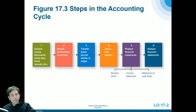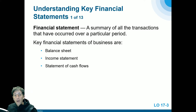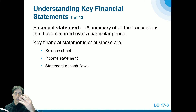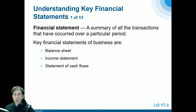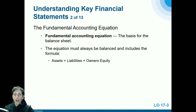The three main statements are the balance sheet, income statement, and statement of cash flows — a summary of all transactions that have occurred over a particular period. Typically these are done quarterly, so four times a year the accounting department updates these three sheets. If done annually it would be once a year, but quarterly is the most common.